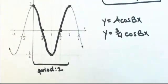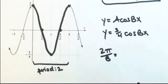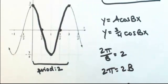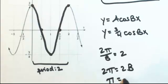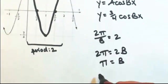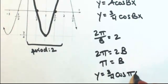So again, to figure out the b, I'm going to take 2π divided by b, which is the new period, which is 2. So then 2π equals 2b. So π is b. Plugging that into our equation, y is equal to 3 fourths cosine πx.